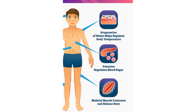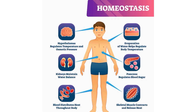Blood distributes heat throughout the body. Evaporation of water — what we simply call sweating — helps to regulate body temperature. The pancreas regulates blood sugar level, and skeletal muscles contract and release heat. This illustration clearly shows how our internal equilibrium is maintained, that is, how our body maintains homeostasis.